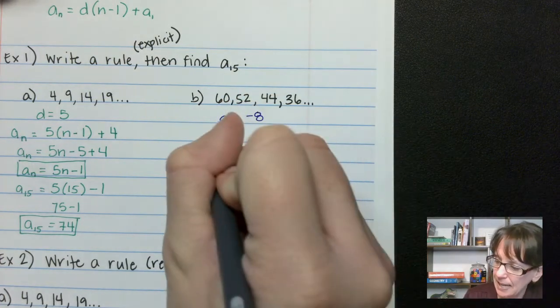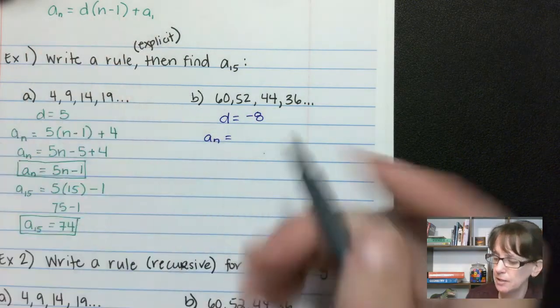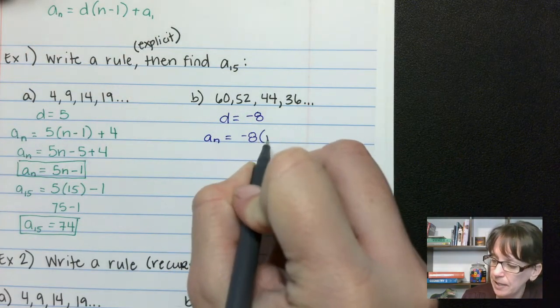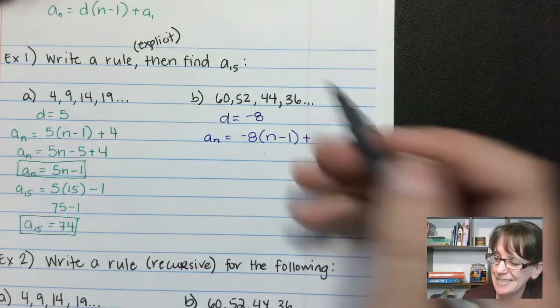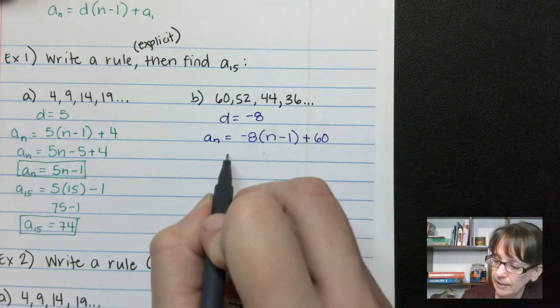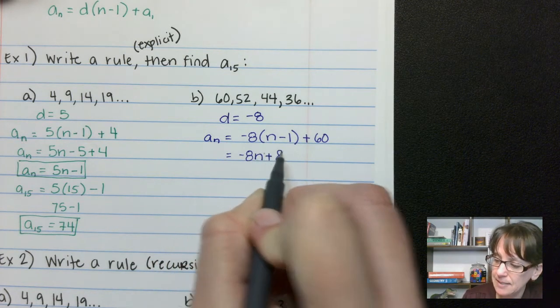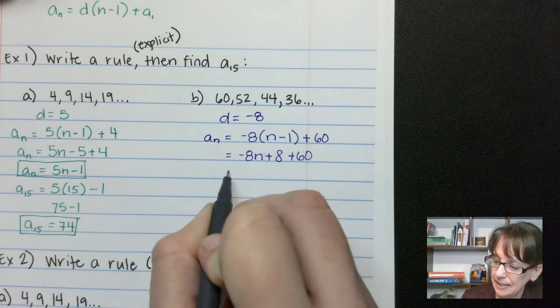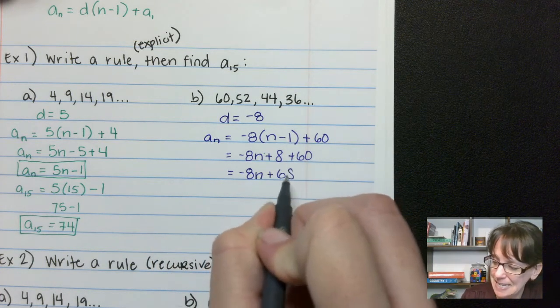Now we're going to say a_n equals, and I'm using this formula right back up here, our common difference, negative 8 times (n minus 1) plus what happens in position 1 is 60. All right, let's distribute. We get negative 8n plus 8 plus 60 equals negative 8n plus 68.